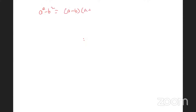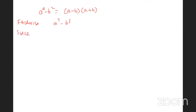We started to look at factorizing a squared minus b squared and we got (a minus b)(a plus b). So what that means is that (a minus b) is a factor and (a plus b) is a factor. Our homework was to factorize a cubed minus b cubed.